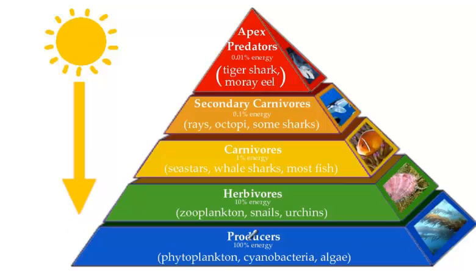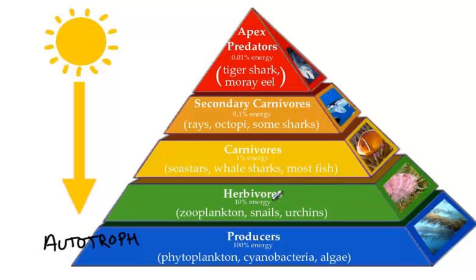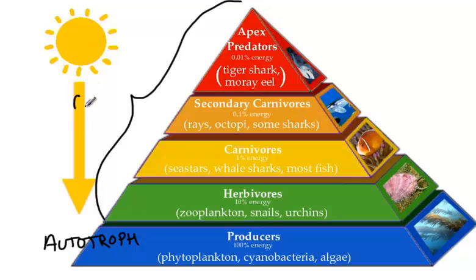Another name for a producer that we might run into is autotroph — autotroph meaning on their own. Something that's automatic happens on its own, and an autotroph is able to make its food on its own. As we move up the food chain, we see that we have, labeled here, herbivores. Anything that is unable to make its own food is a consumer, so everything in this range is a consumer.